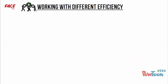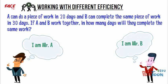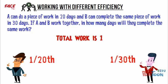Let's consider the following example. A can do a piece of work in 20 days and B can complete the same piece of work in 30 days. If A and B work together, in how many days will they complete the same work? If the total work is 1, then A can complete 1/20th and B can complete 1/30th of the total work in one day.